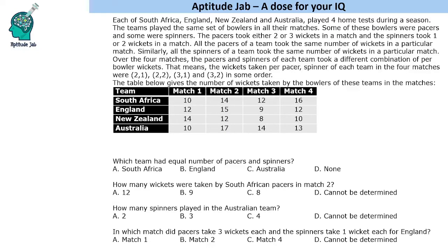We are given that the teams played with the same set of bowlers in all their matches. Some of these bowlers were pacers (fast bowlers) and some were spinners.